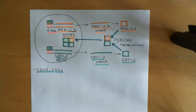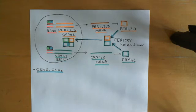We've seen that this circadian clock involves these period and cryptochrome proteins going up and down on a 24-hour basis. And when this circadian clock is actually entrained with the light-dark cycles, then it should be the case that cryptochrome and period are at their lowest during midnight.